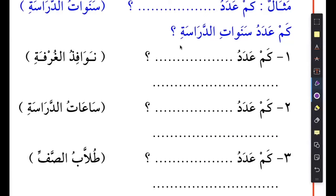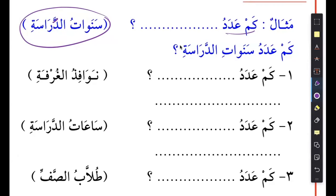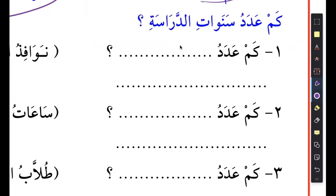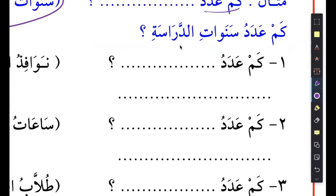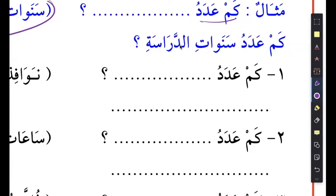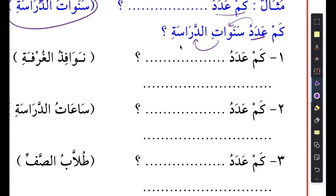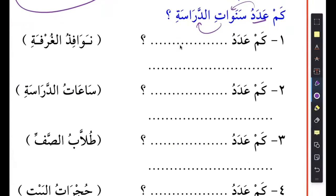Sometimes we use a different way - we say kam adadu. So they want you to use sanawatu dirasa. You say kam adadu - adad means number. If you want to ask how many numbers of years of study, you will say kam adadu sanawatu dirasa, because these are mudaf and mudaf ilai. This is mudaf, this is mudaf ilai, then this is mudaf, this is mudaf ilai. We talked about this one before.